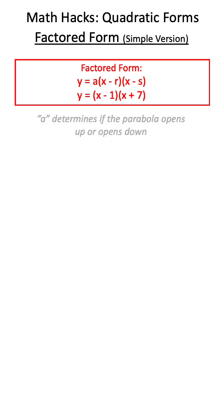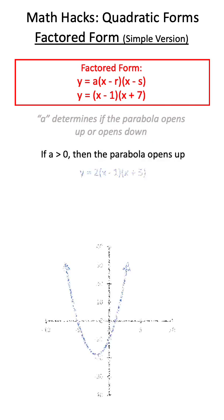A determines if our parabola opens up or down. If A is positive, such as an equation like this, the parabola will open up.